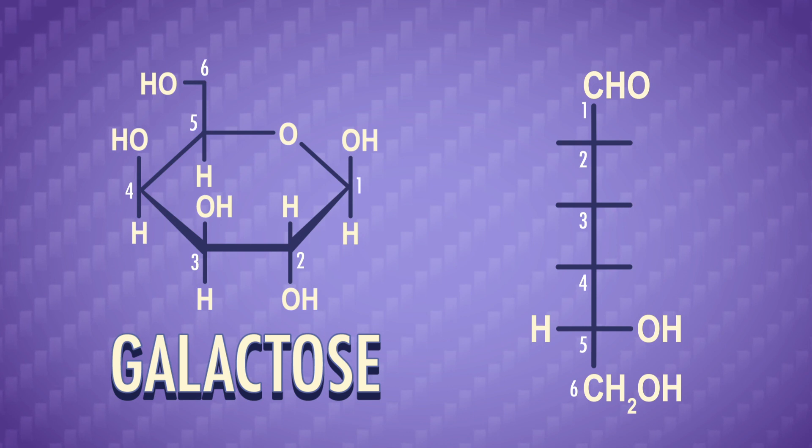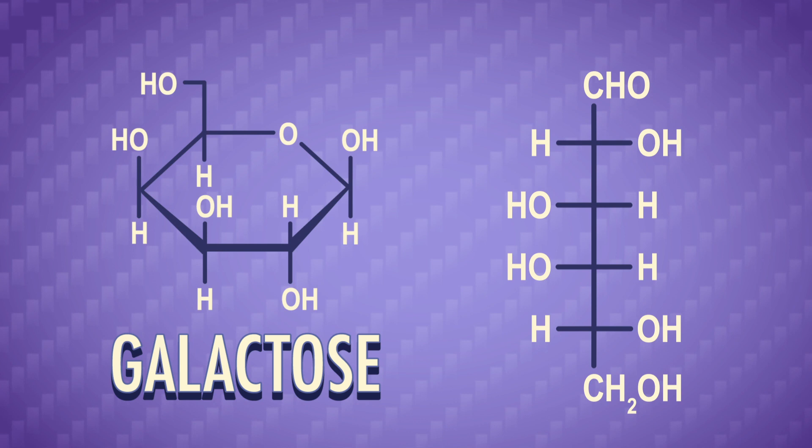Lastly, we need to fill in the rest of the groups. Those pointing down on the Haworth are on the right-hand side of the Fischer projection. And those pointing up go left. And we're done!